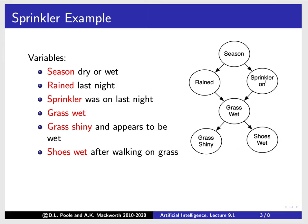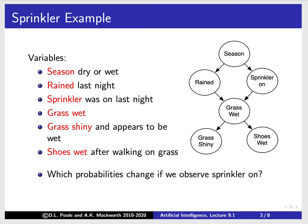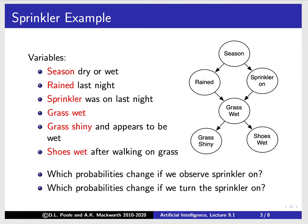Think about observing that the sprinkler is on. If we observe the sprinkler on, we get more information about the season and whether it rained — the grass is wet, the grass is shining, the shoes are wet. However, if we were to turn the sprinkler on, we don't change the season. You can't change the season by turning the sprinkler on, but observing sprinkler on does give us information about the season. Turning the sprinkler on does not affect whether it rained, but it does affect whether the grass is wet, whether the grass is shiny, and whether the shoes are wet.